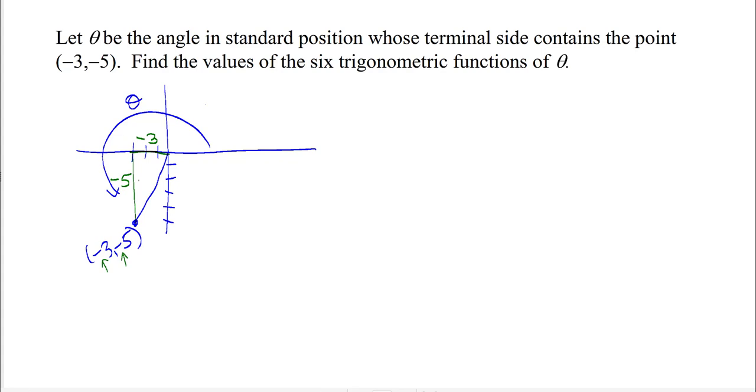To find the six trigonometric functions of θ, we can use this triangle and its sides. We need the hypotenuse, so I'm going to use the Pythagorean theorem: (-3)² + (-5)² = c². That's 9 + 25 = c², so c² = 34 and c = √34. We don't worry about the plus-minus because this is the length of a side.